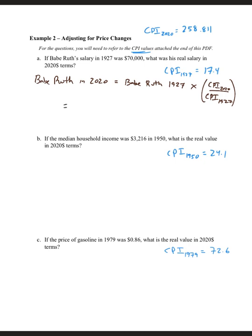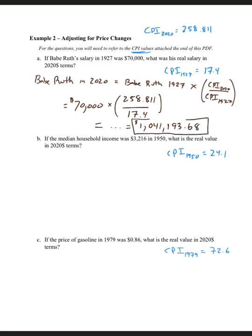My answer is $70,000 multiplied by 258.811 divided by 17.4. We plug that into our calculator and get $1,041,193.68. This is what that 1927 salary would be able to purchase in the year 2020. If you know anything about Major League Baseball and what people get paid now, Babe Ruth was severely underpaid. Of course, the game has changed a lot since 1927.